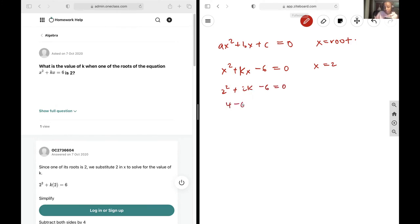So 4 minus 6 plus 2k is equal to zero. Negative 2 plus 2k is equal to zero. Let's just add 2 to both sides. These two cancel and you get 2k is equal to 2.